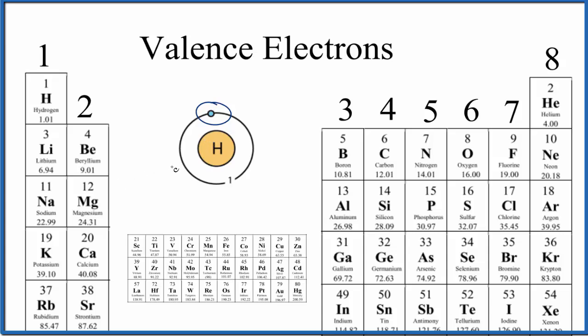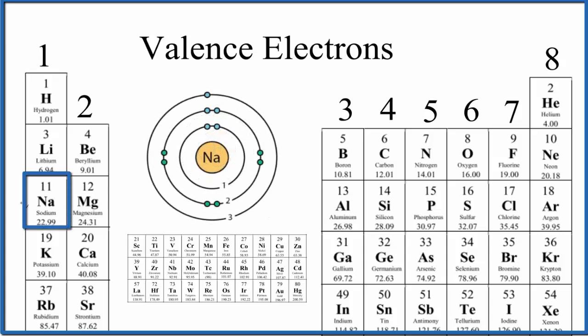How about sodium? Sodium, that's also in group one. It has 11 protons, so it has 11 electrons. But when we look at the energy levels here, we have this first one that's full, the second one's full, and the third energy level right there, just one valence electron. So sodium, like hydrogen because it's in group one, has one valence electron.